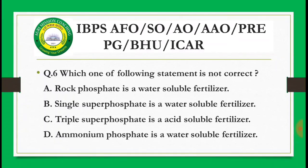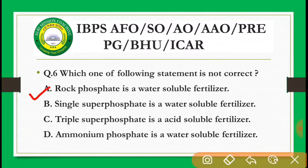Next question: Which one of the following statements is not correct? Options: rock phosphate is a water soluble fertilizer; single super phosphate (SSP) is a water soluble fertilizer; triple super phosphate is an acid soluble fertilizer; ammonium phosphate is a water soluble fertilizer. The correct answer is A — rock phosphate is citric acid and water insoluble fertilizer, so that statement is incorrect.